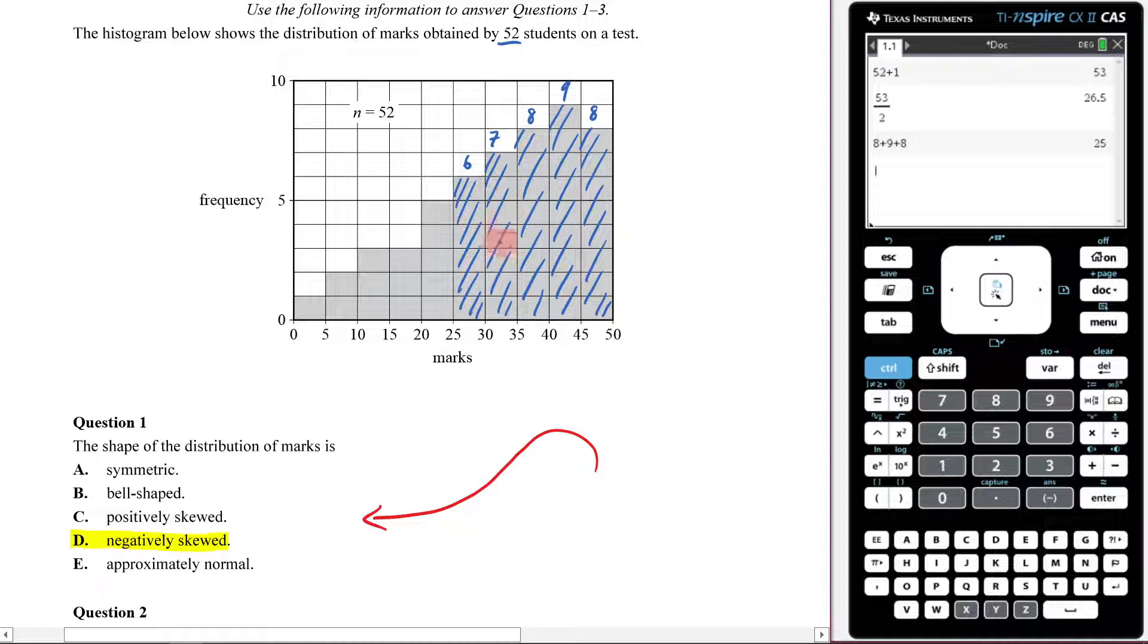That must mean I must be in this one right here. Here is going to be my median. Because in there, I'm going to hit my 26.5.